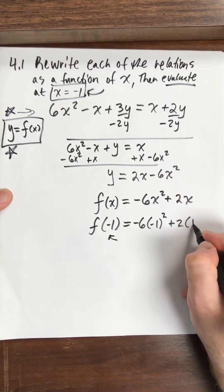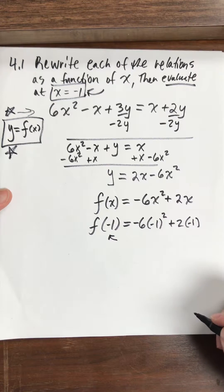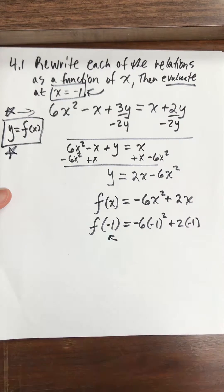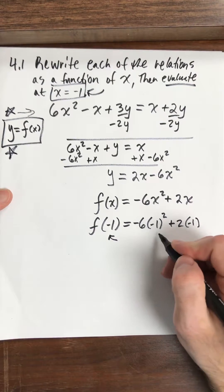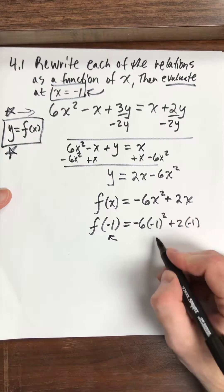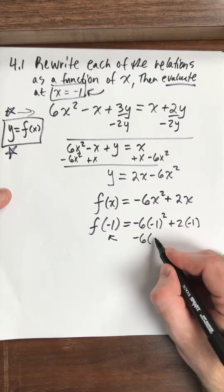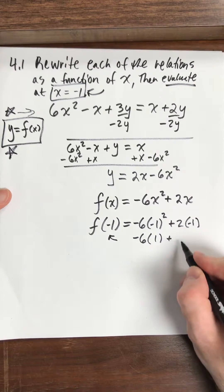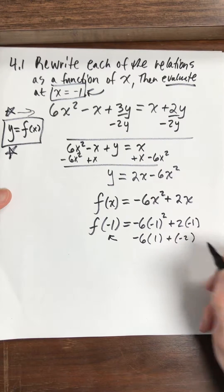And I promise you this is going to help you when you go to evaluate this. Alright? When we work, we work with parentheses first. So negative 1 squared is just 1. So negative 6 times 1. And then 2 times negative 1, that's negative 2 total.